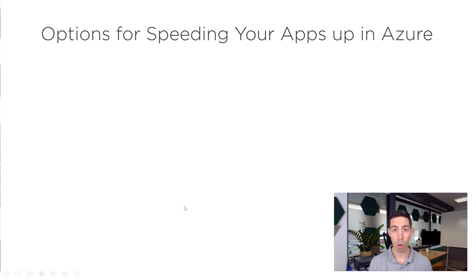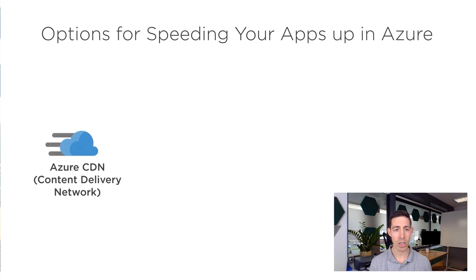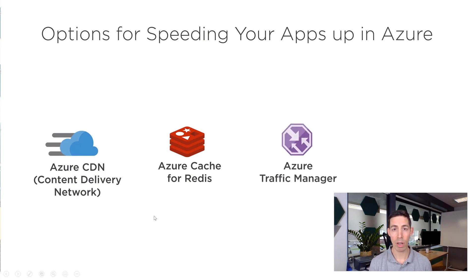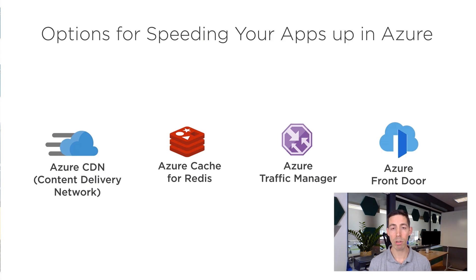First I'll tell you which options there are in Azure for speeding up your applications. That is the Azure CDN — the Azure Content Delivery Network — which you can use to get your static files closer to your users. There's also Azure Cache for Redis, an in-memory cache you can use to store data and have it retrieved very quickly. There's Azure Traffic Manager to route traffic to the most performant applications, and Azure Front Door, which you put in front of your applications. Front Door uses the HTTP stack, while Traffic Manager uses DNS and other protocols.